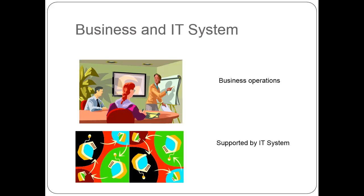Some systems directly support users by providing a web interface. Others support indirectly — for example, when you call a call center, they can answer your call and get your information without delay through information systems. So an information system aligned to the business can give very big value to the business and make it successful.